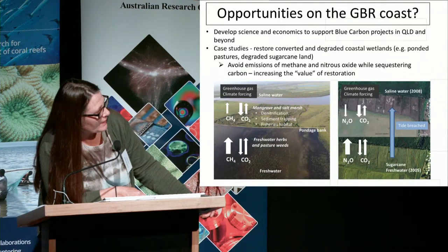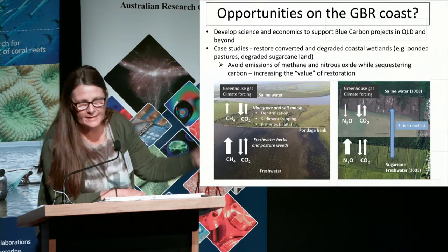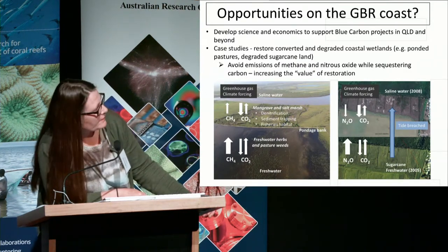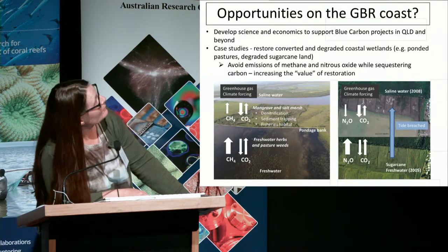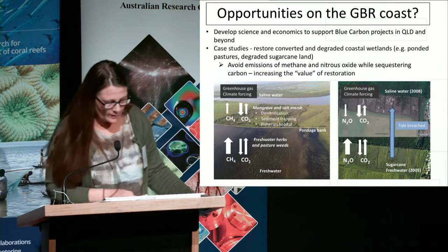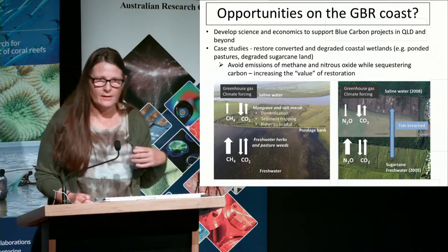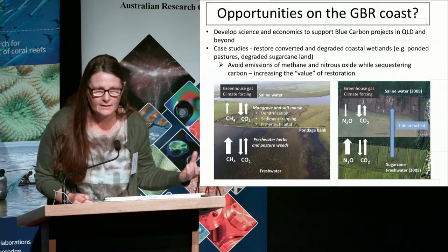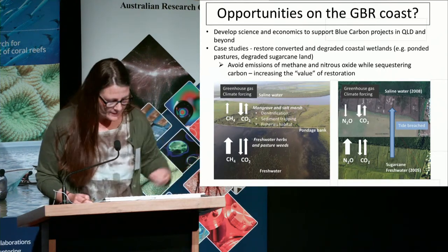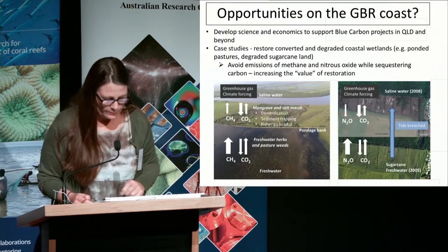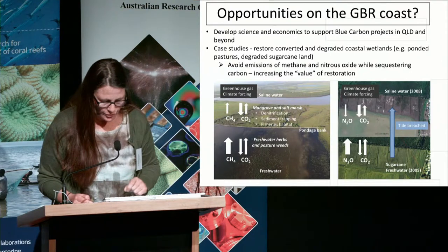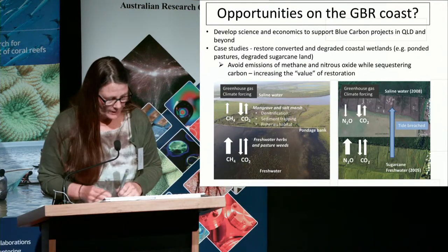Going from a sugarcane field, which emits nitrous oxide — an extremely powerful greenhouse gas — to a saline wetland that doesn't emit nitrous oxide and is in fact a sink for nitrous oxide and carbon dioxide. We have a few case studies currently underway to shore up the science around re-wetting the landscape with seawater to reduce greenhouse gas emissions.